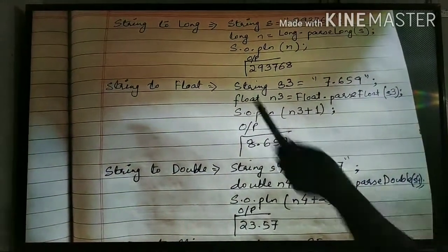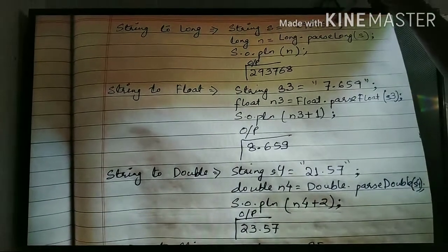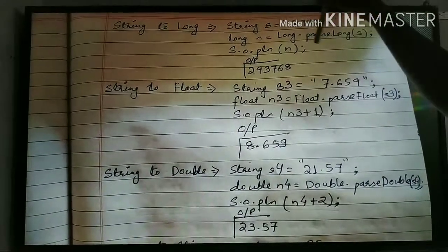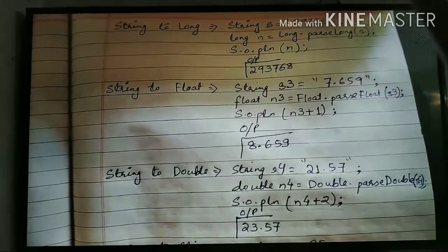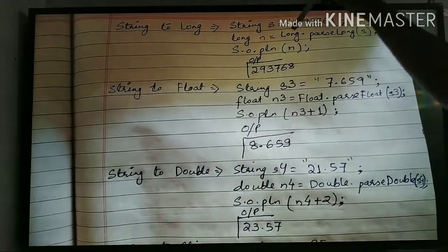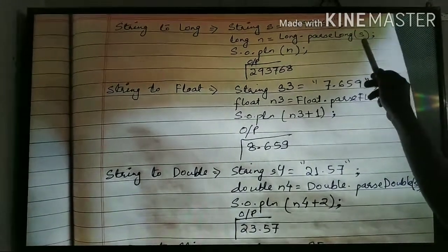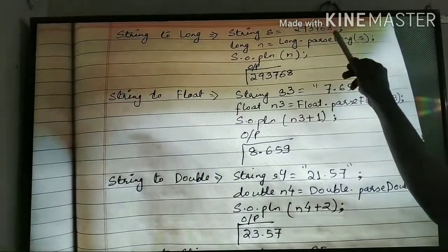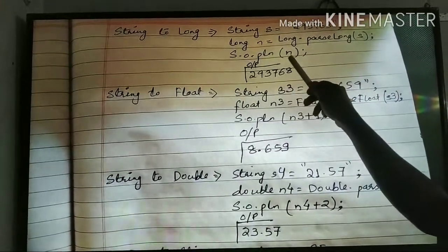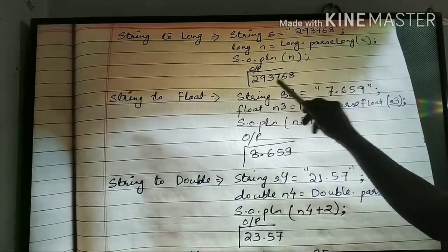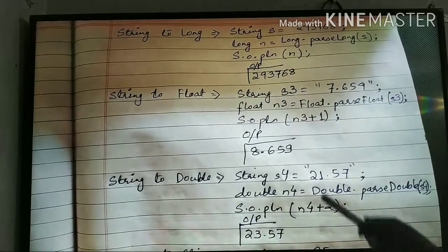Similarly, for string to long: String s = "293768". There is a parseLong method which converts from string to long, and that belongs to the Long wrapper class. So long n = Long.parseLong(s). S was of string type but got converted into long type and stored under n. System.out.println(n) shows the same value 293768, but this n is of long type.